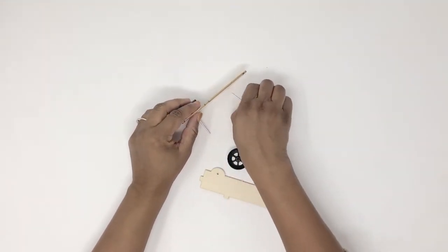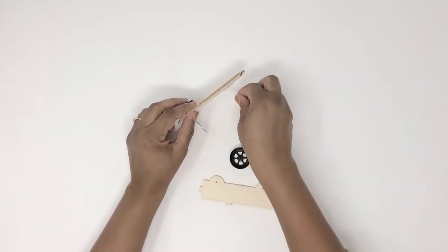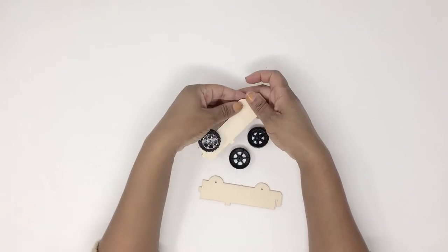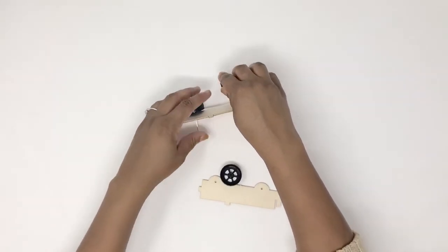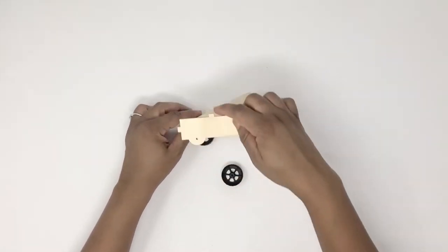Next we're going to attach the rest of the wheels. I find that it's easier to put the pointy end of the axle on something hard as you push the wheel down. It's just easier on the fingers.